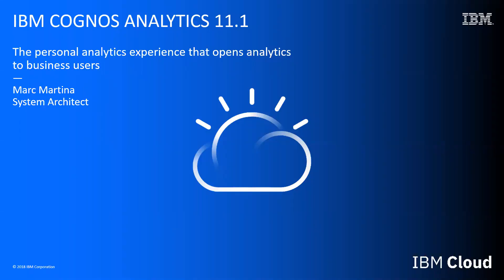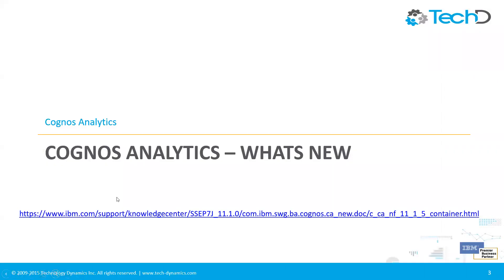We're going to go through the latest iteration of Cognos Analytics. There is a what's new URL, and I've included that in the slide deck — don't worry about copying it down, we'll send the slide deck to everybody who registered. It's a good place to see all the details of what has been added or adjusted in the different iterations of Cognos. I'm going over 11.1.5, but if you're on 11.1.3 you'll want to know what's new in 11.1.4 and 11.1.5.